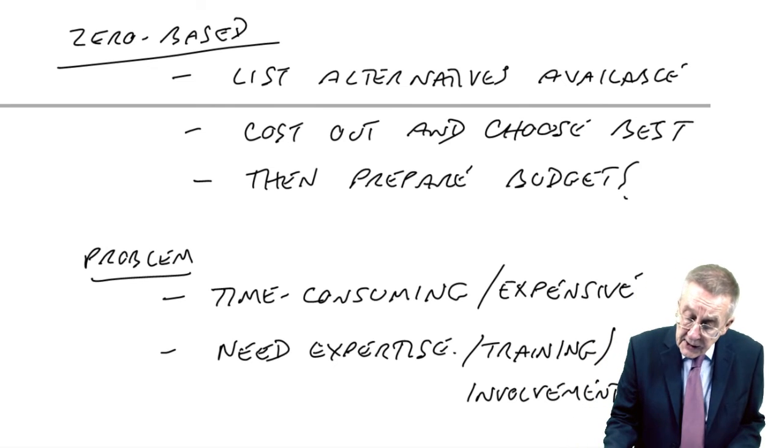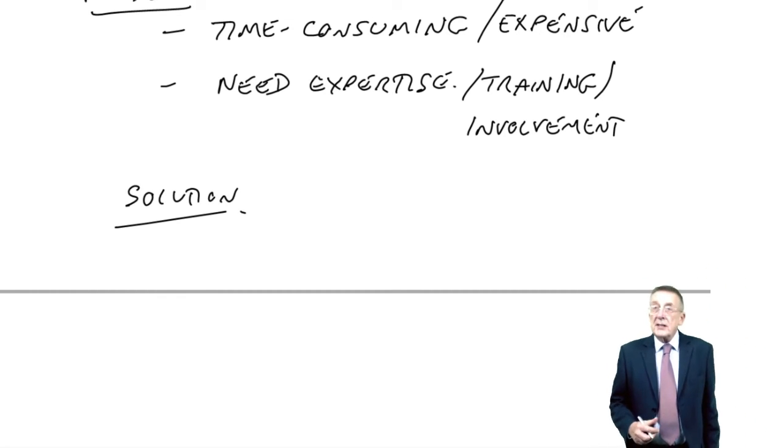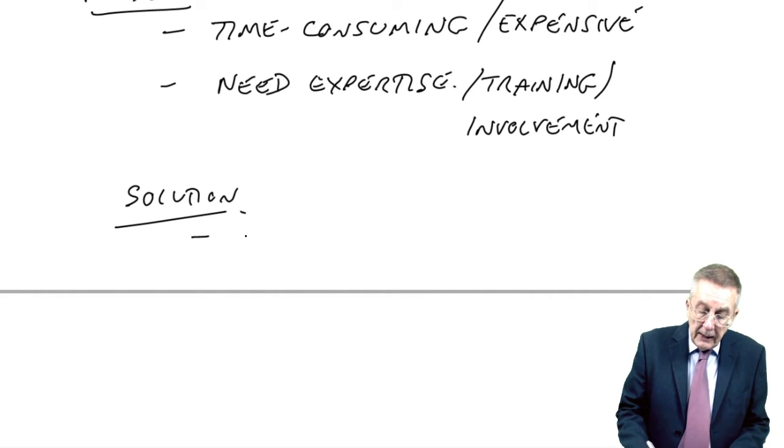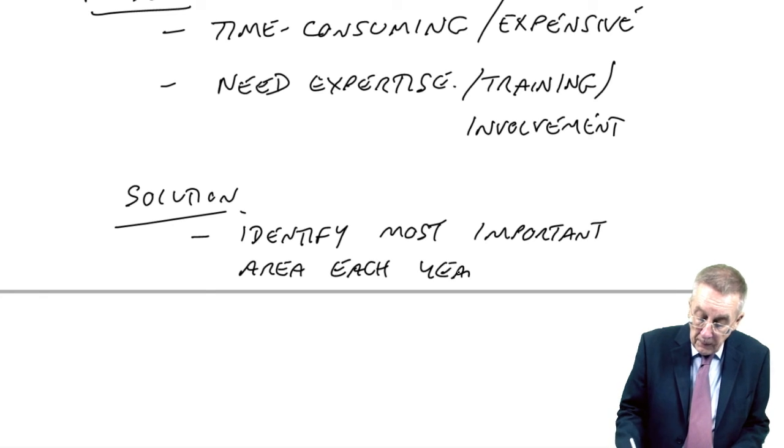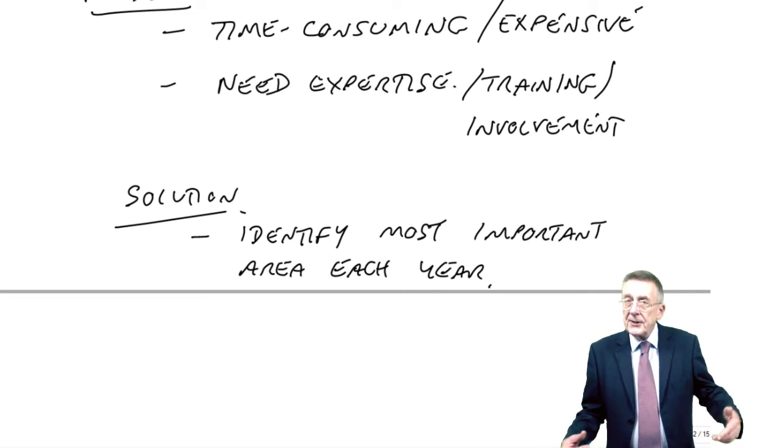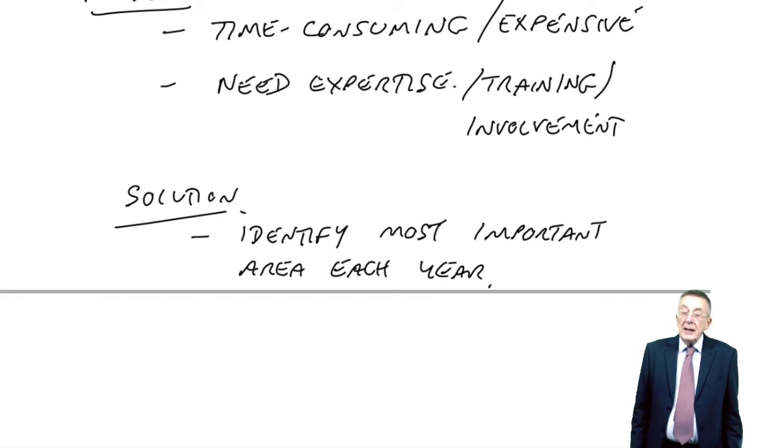And so what tends to happen, to do this on everything at once would just be chaotic. You identify the most important area each year. I thought from a cost point of view, for most businesses, the cost of producing desks is going to be far higher than the potential saving on telephone. So before you even apply the zero-based, you identify the most important areas.